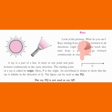Here, P is the origin. An arrowhead is drawn to show that the ray is infinity in the direction of Q. The figure can be read as ray PQ.